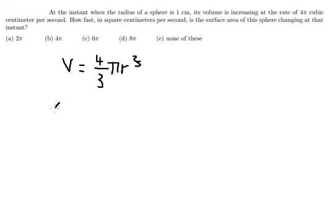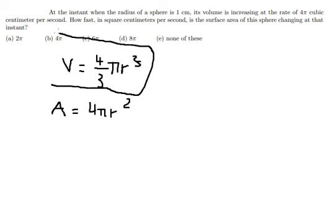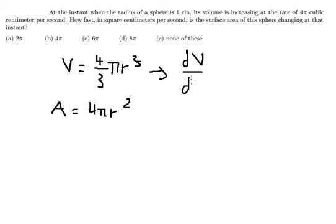Now we have the volume, so we need to do first derivative for both sides of this one. So we have dV/dt equals 4πr² dr/dt.